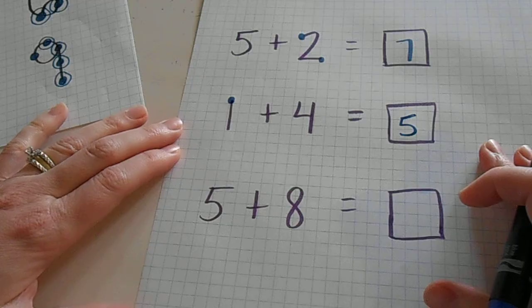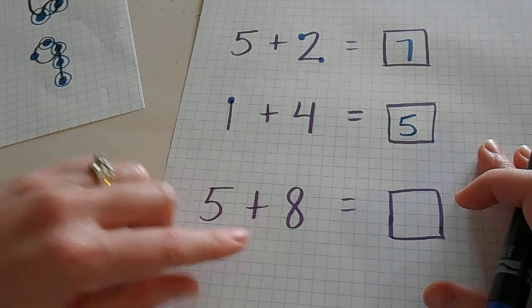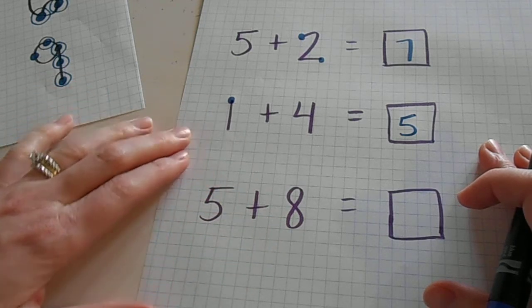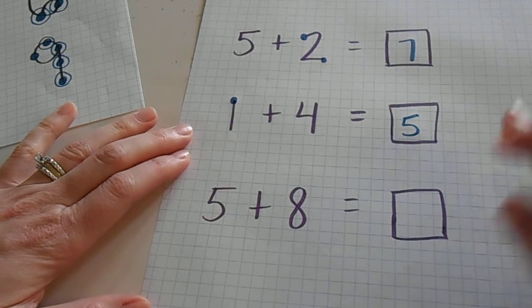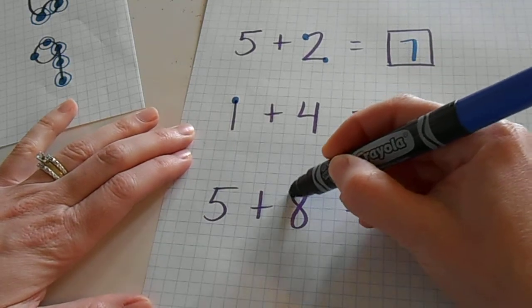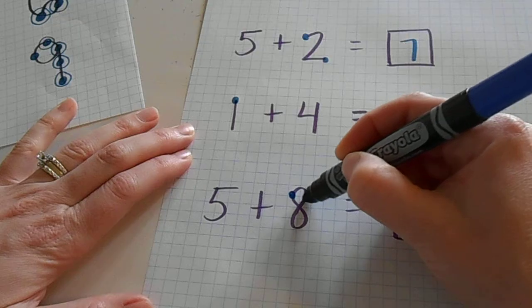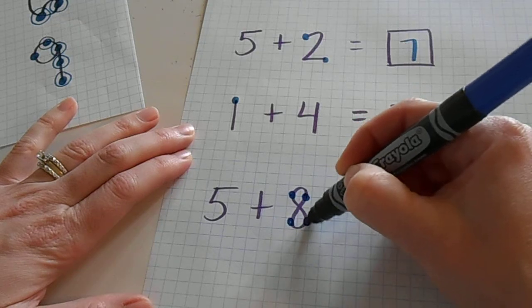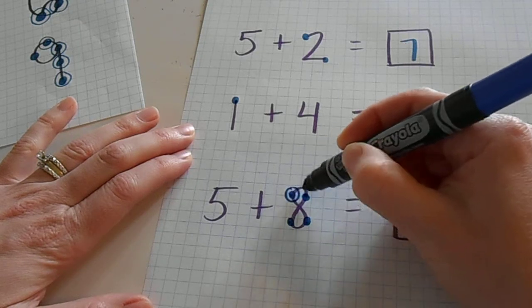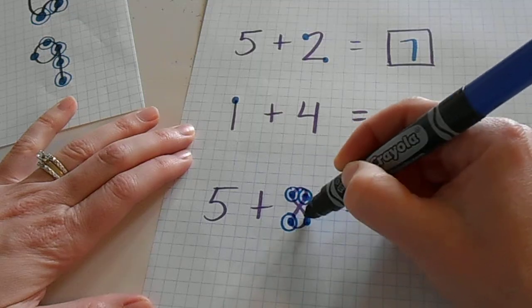And then it works the same down here. Even with those larger numbers, like I said, that have the circles around the dots, your kids will know to make the smaller dots. One, two, three, four, five, six, seven, eight.